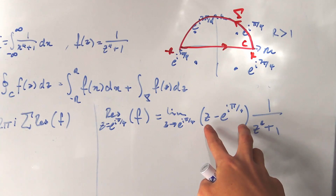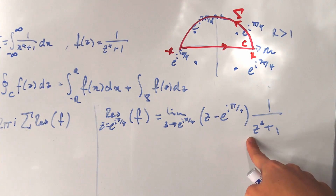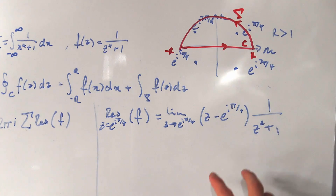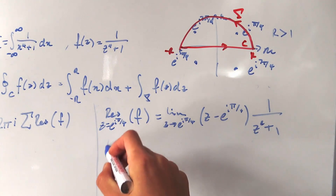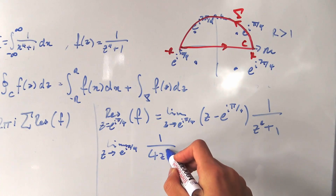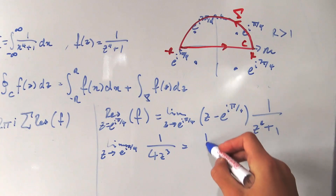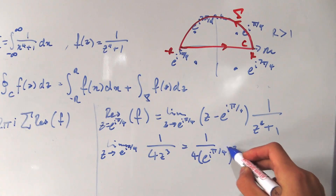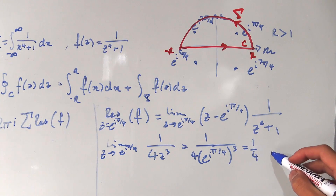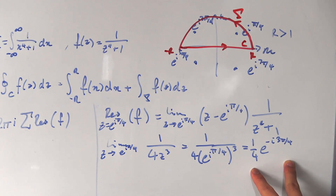Using L'Hôpital's rule: differentiating the top gives 1, and differentiating the denominator gives 4z cubed. Plugging in z equals e to the iπ/4, we get 1 over 4 times e to the iπ/4 raised to the 3rd power. That simplifies to one quarter times e to the negative i3π/4. This is our first residue.